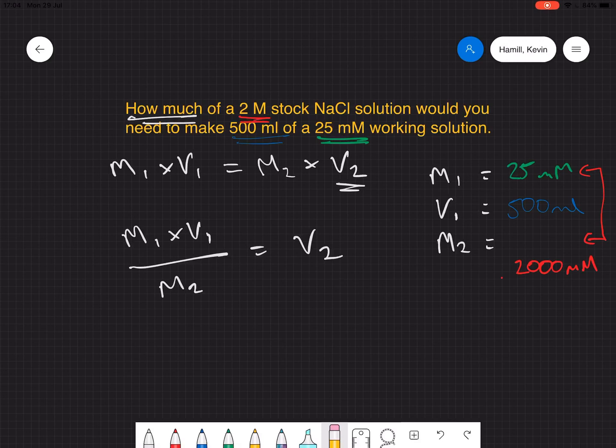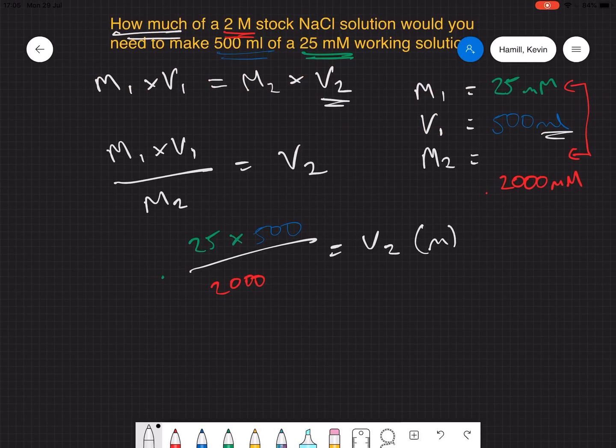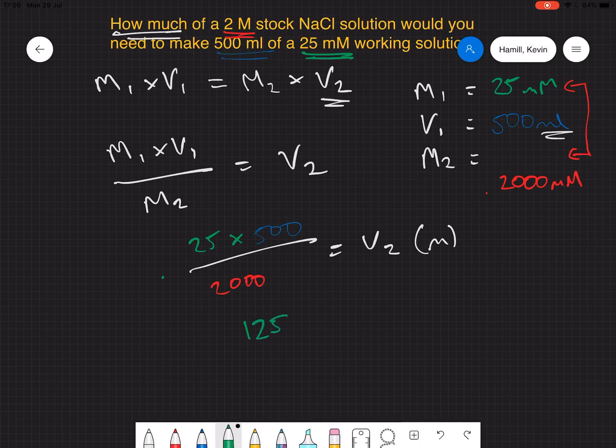If we plug these into our equation, then we just have 25 multiplied by the 500, and that's divided by the 2,000, is equal to the volume that we need. Now I haven't done anything with the mils, so that means that the volume is going to be in mils. And so if I just do the equation now, 25 times 500 is 12,500. And that's divided by 2,000, and that's therefore equal to 6.25 mils.